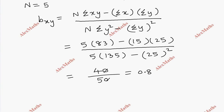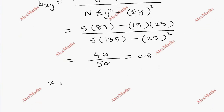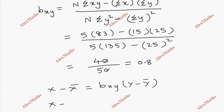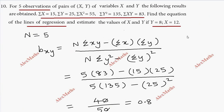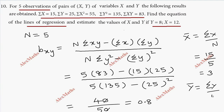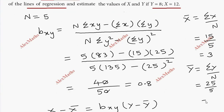So if we go to the equation x minus x bar equal to bxy into y minus y bar. Now x bar equals sigma x by n. Sigma x is 15, so 15 by 5 which is 3. And y bar equals sigma y by n. Sigma y is 25, so 25 by 5 which is 5. So x bar is 3 and y bar is 5.